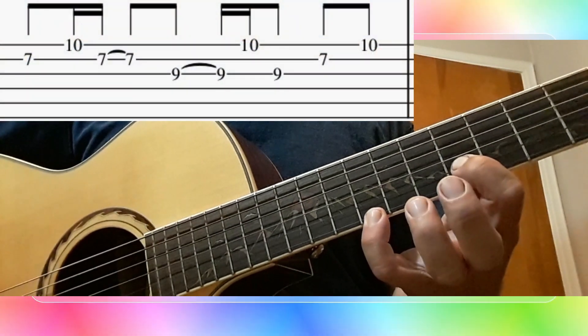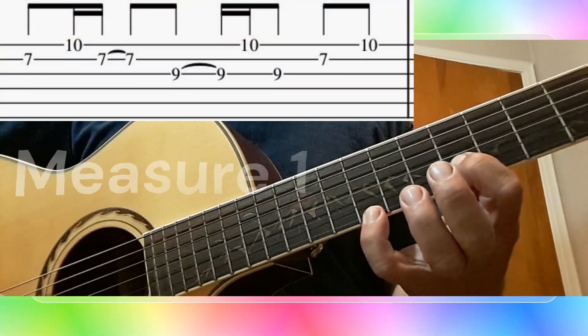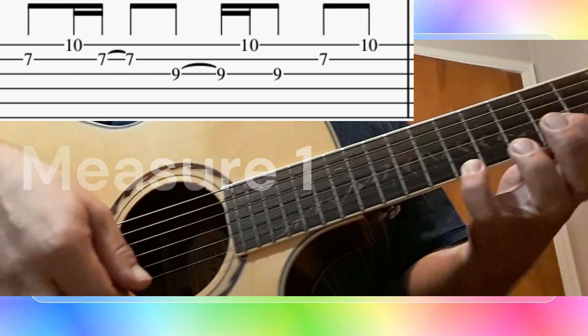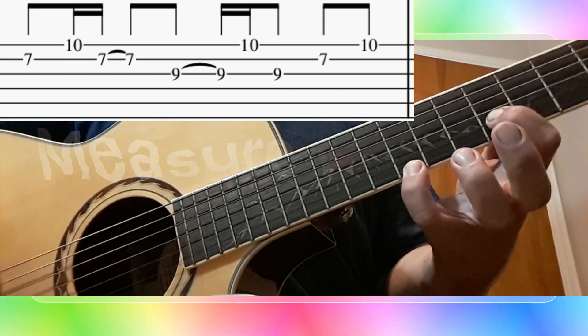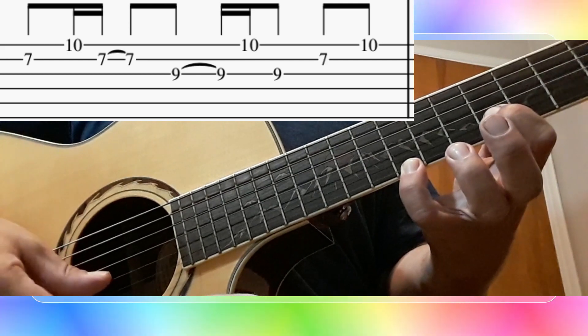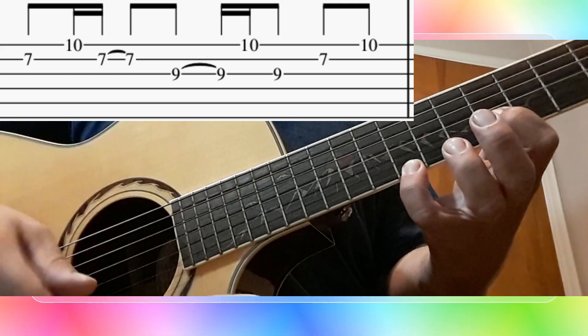Okay, play string 2, which your 1st finger is on. Then play string 1, which is fret 10, your 4th finger, the pinky. Then back to string 2. So we have F, D, F. It's F sharp.